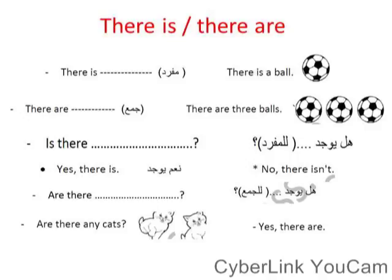cats. طبعا مش بحط أداة a or an لأنه بتكلم في الجمع, وبنحط في نهايته s. بسأل question بقول are there. بجاوب yes there are or no there aren't. تمام كده عرفنا الفرق بين there is وthere are: there is للمفرد, there are للجمع.